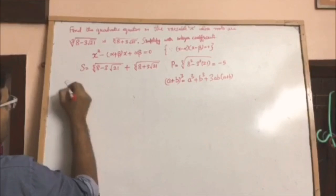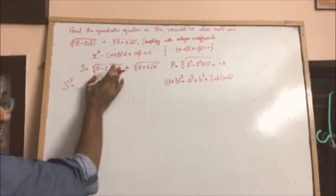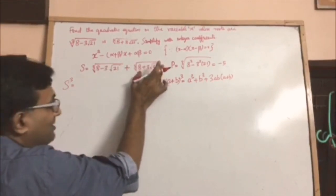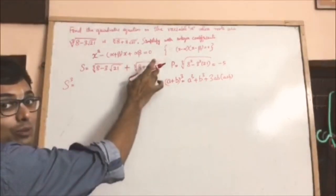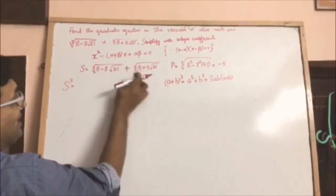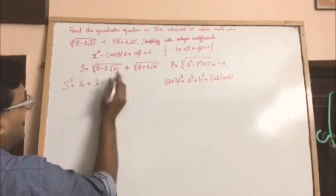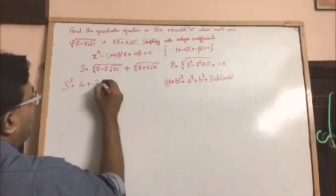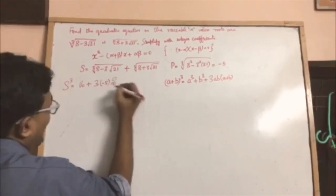So s cubed equals the cube of (8 minus 3 times square root of 21) plus the cube of (8 plus 3 times square root of 21). Adding these two gives 8 times 2, which is 16, plus 3 times the product which is minus 5, times the sum which is s.